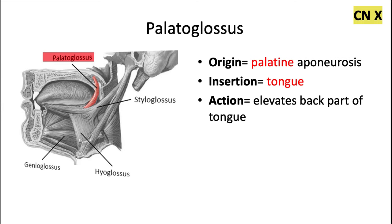Here comes the exception — the palatoglossus muscle. This one originates from the palatine aponeurosis, hence the name, and it inserts into the tongue. This one is innervated by cranial nerve 10; it's the only tongue muscle not innervated by cranial nerve 12. Its action is to elevate the back part of the tongue, and it also forms the palatoglossal arch, which is the anterior pillar of the fauces, just anterior to the palatine tonsil, marking the end of the oral cavity proper.